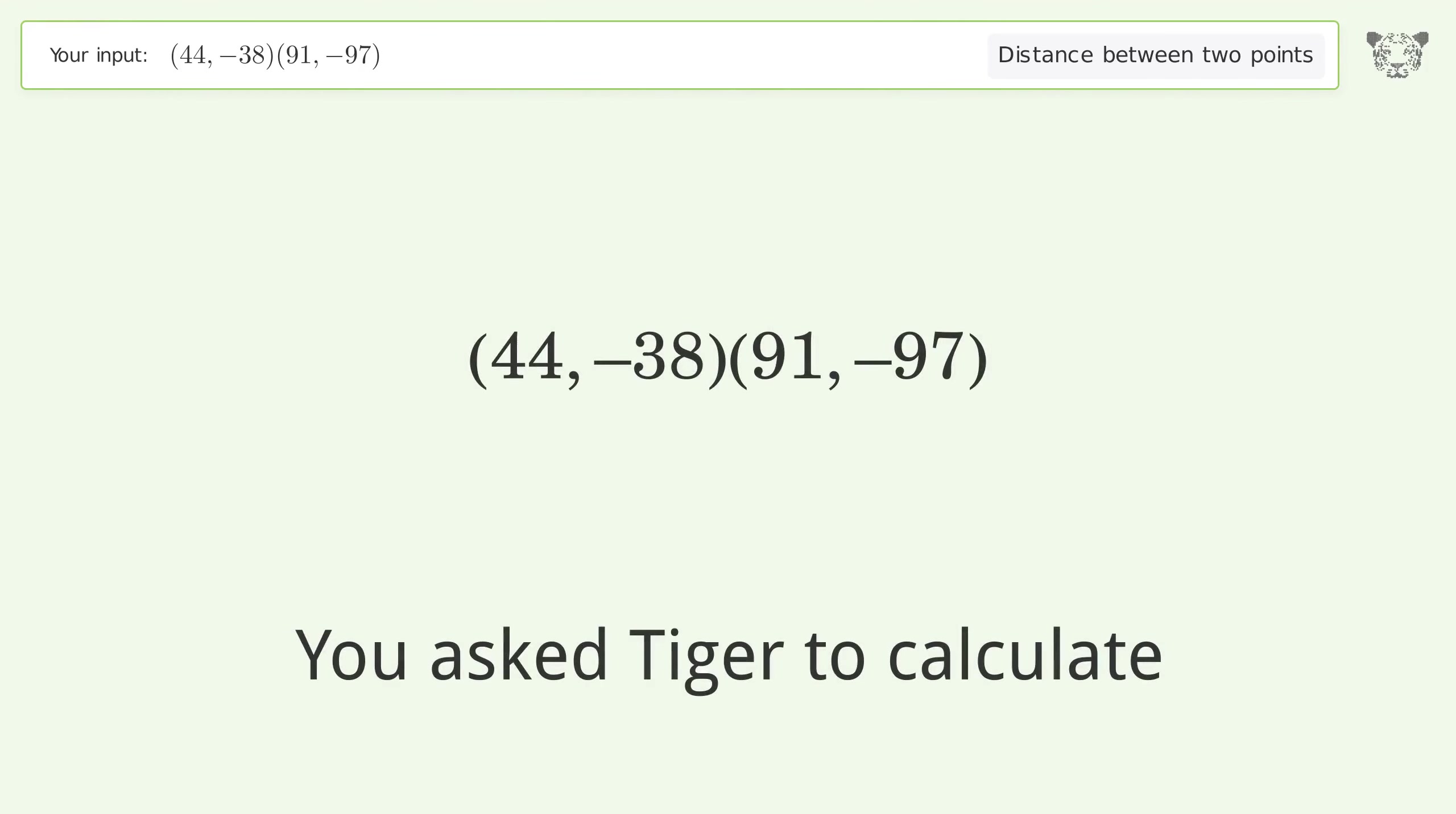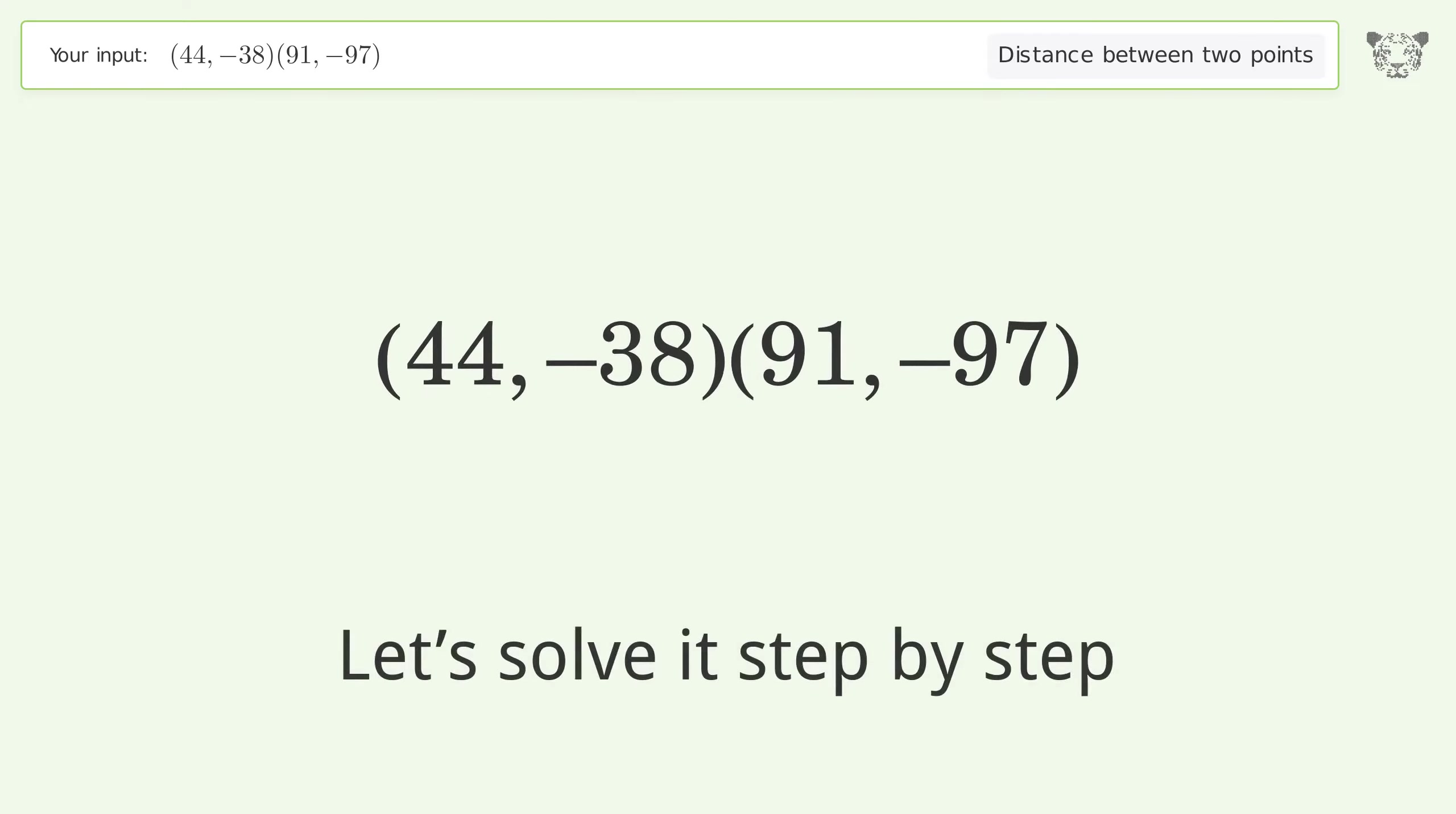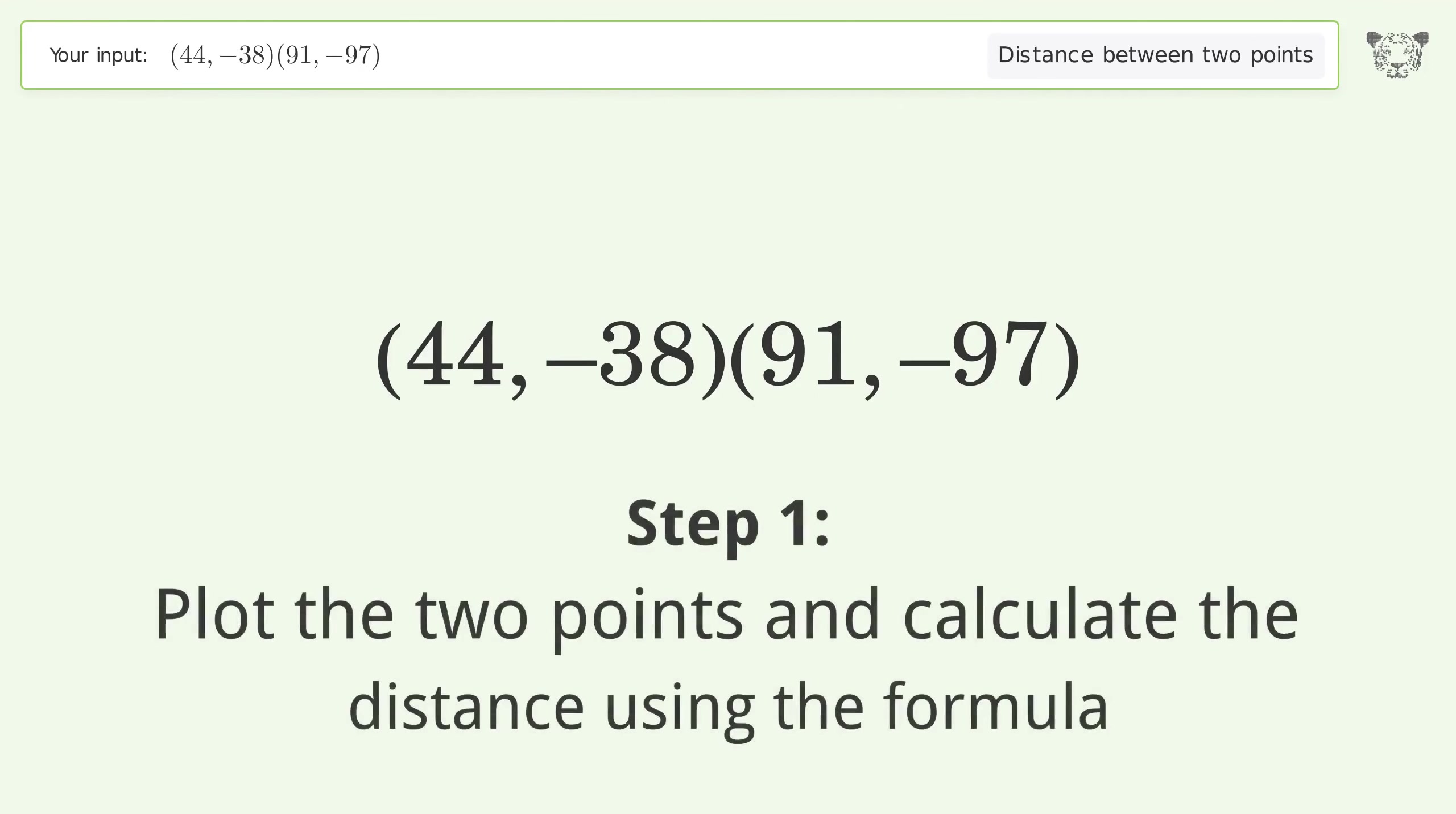You asked Tiger to calculate the distance between two points. The distance between the two points is the square root of 5690, or 75.432. Let's solve it step by step. Step 1: Plot the two points and calculate the distance using the formula.